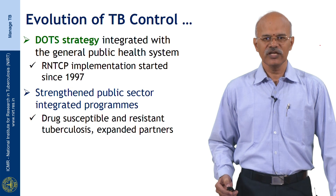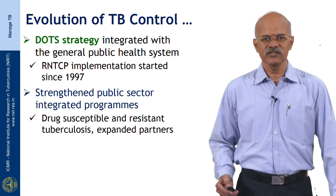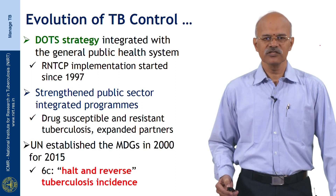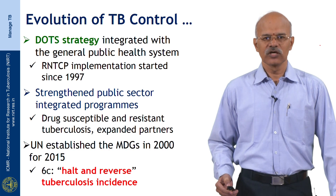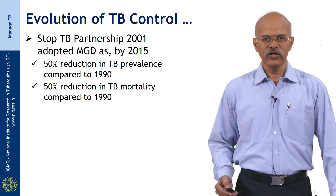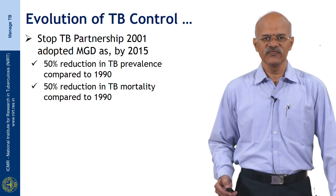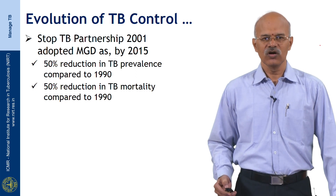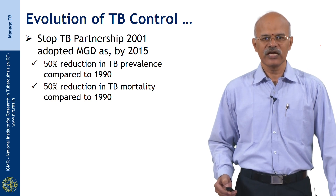Later there was strengthening of public sector integrated programs for drug-susceptible and resistant tuberculosis with expanded partners. The United Nations established the Millennium Development Goals in 2000 for 2015, with the goal to halt and reverse tuberculosis incidence. Following this, the Stop TB Partnership in 2001 adopted targets of a 50 percent reduction in TB prevalence and a 50 percent reduction in TB mortality compared to 1990.